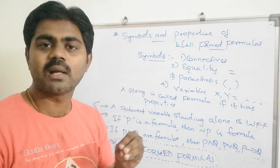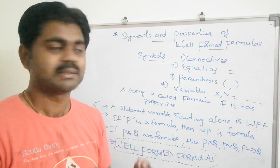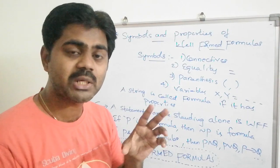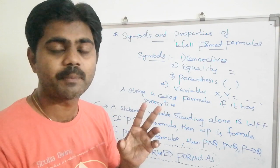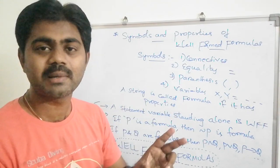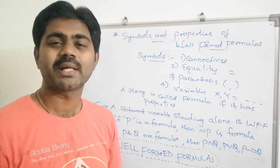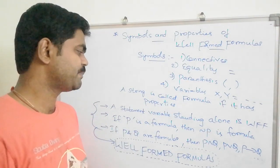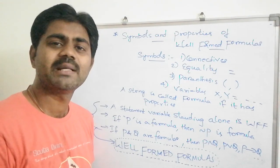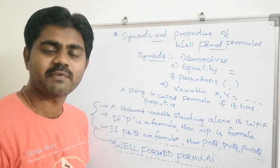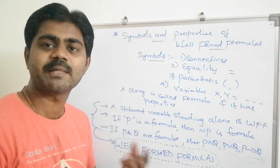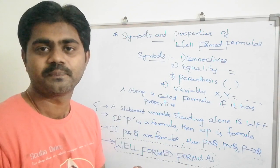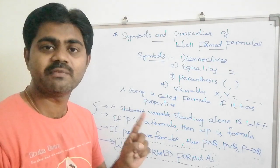When can we call a string a formula? A string is called a formula — or well formed formula — if it follows certain properties. The first property is that a statement variable standing alone can be a well formed formula. For example, negation P has only P and the negation connective, with no other statement, so even a statement variable standing alone can be a well formed formula.